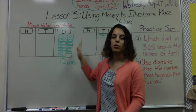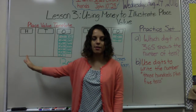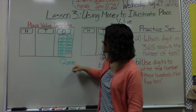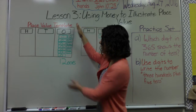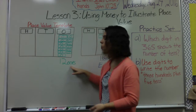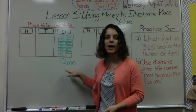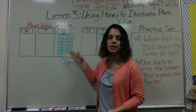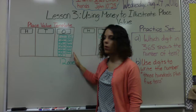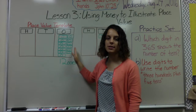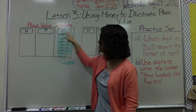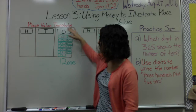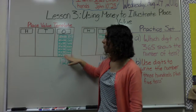You will receive a place value template in class that will look similar to this. We're going to start with twelve ones. If I had twelve dollars and I just had twelve one-dollar bills, they would all be in my ones category because they are one-dollar bills. The 'O' stands for ones, so I would put twelve one-dollar bills there.